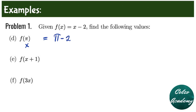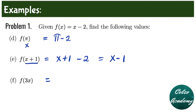We will leave the answer in terms of pi. For question letter E, we will substitute x plus 1 into the x minus 2. So we have x plus 1 minus 2, and we can simplify this as x minus 1. For question letter F, f of 3x — we are substituting 3x into the x minus 2, so we have 3x minus 2 as the simplest form.